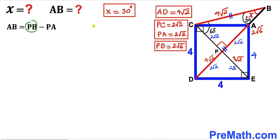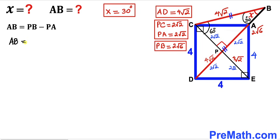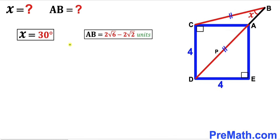Substituting the values: PB = 2√6 and PA = 2√2, so AB = 2√6 − 2√2 units. Therefore angle X = 30 degrees and segment AB = 2√6 − 2√2 units.